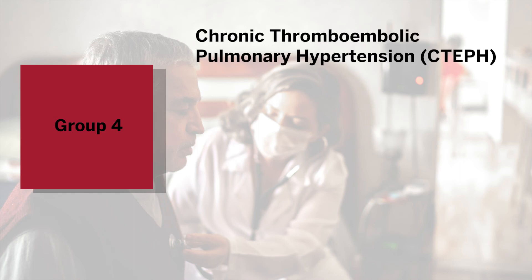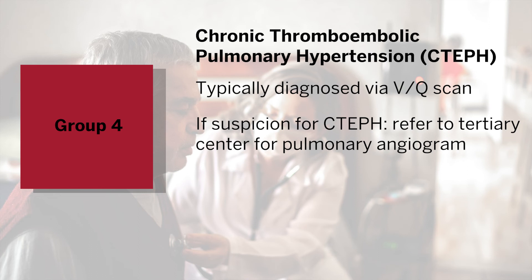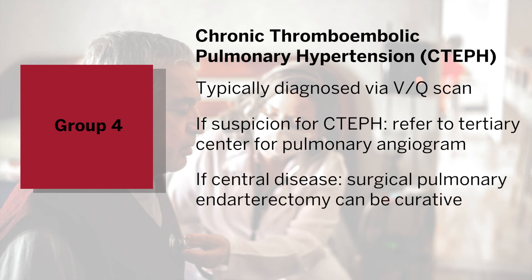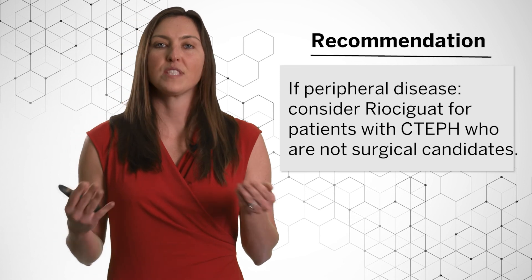Next, we are moving on to group four, sometimes referred to as CTEPH. This can typically be diagnosed via ventilation perfusion scan, or VQ scan. If there is suggestion of pulmonary hypertension on echocardiogram or right heart catheterization, along with a VQ scan suggestive of perfusion defects, this should warrant referral to a tertiary center for pulmonary angiogram. In patients with evidence of central obstruction or central clot, surgical pulmonary endarterectomy may be indicated and can actually be curative of their underlying pulmonary hypertension. For those with evidence of peripheral disease, balloon angioplasty or riociguat can be helpful.